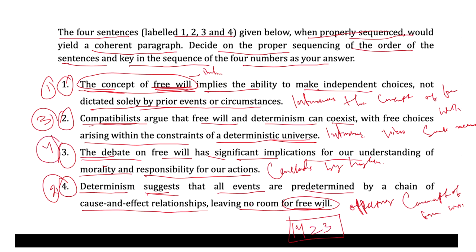The first one introduces the concept of free will — that independent choice is not dictated solely by prior events or circumstances. Option four states that determinism suggests all events are predetermined by a chain of cause and effect relationship, leaving no room for free will — the opposing concept of free will. Then option two introduces the compatibilist view, seeking to reconcile free will and determinism. And three concludes that the debate on free will has important implication for our understanding of morality and responsibility. Hence, the answer should be 1, 4, 2, 3. Hope you understood this. That's all. Thank you.